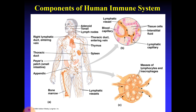The immune system bears certain components called adenoids, tonsils, lymph nodes, thoracic duct, thymus, spleen, lymphatic vessels, and bone marrow. Acquired immunity is classified into two major types: naturally acquired immunity and artificially acquired immunity.